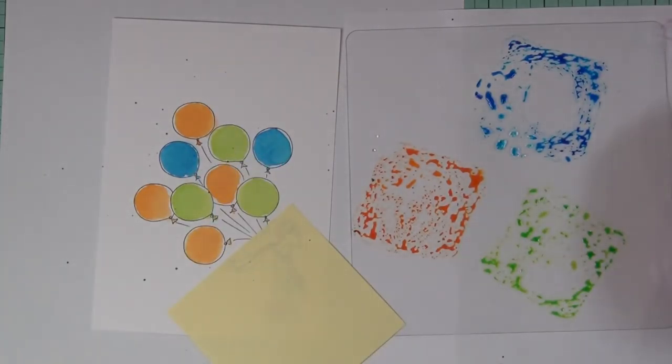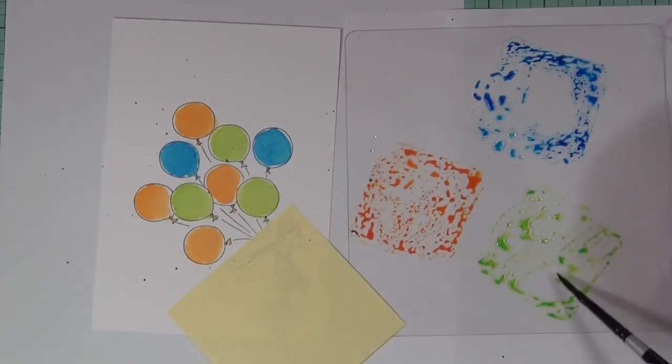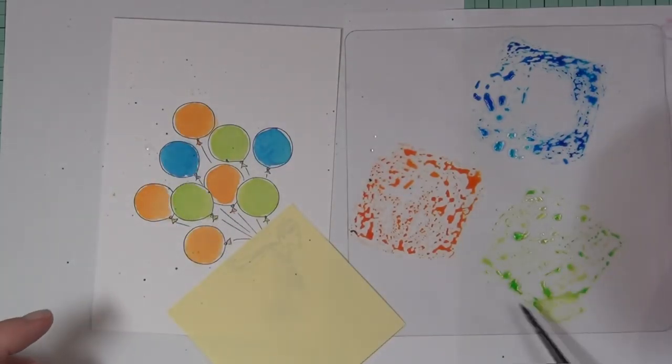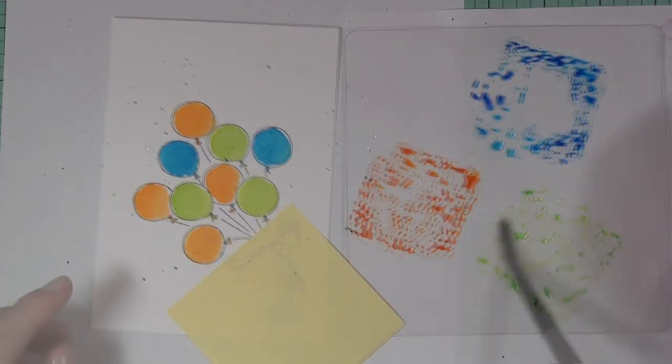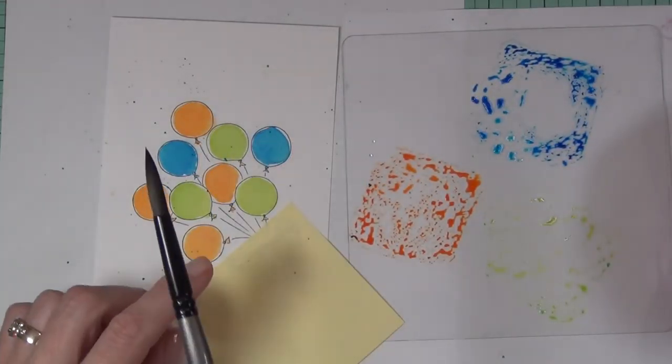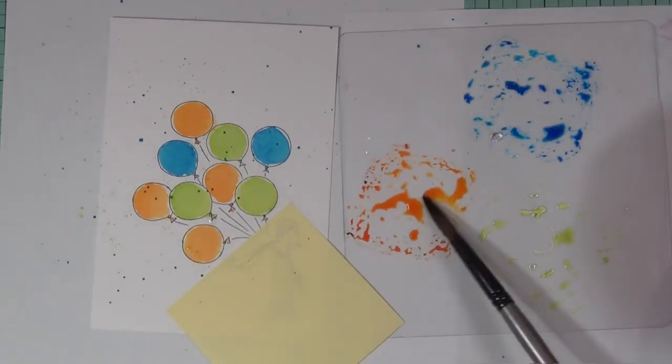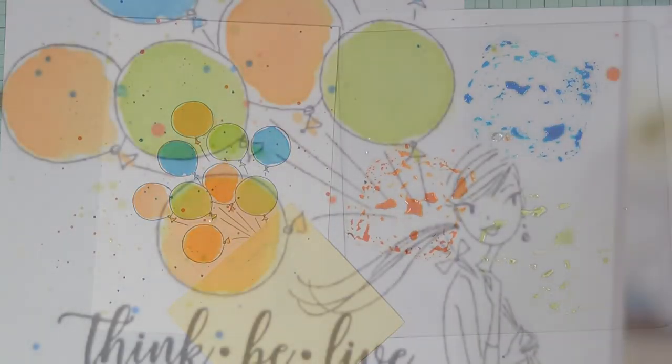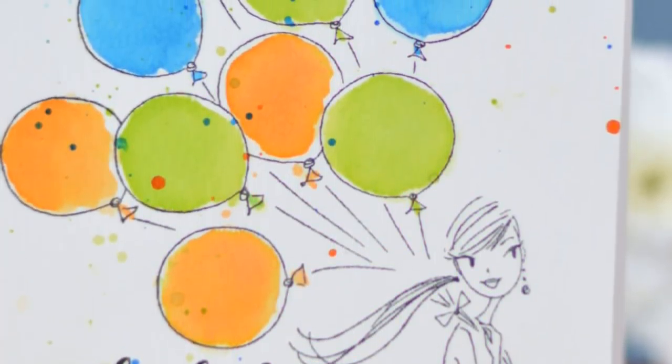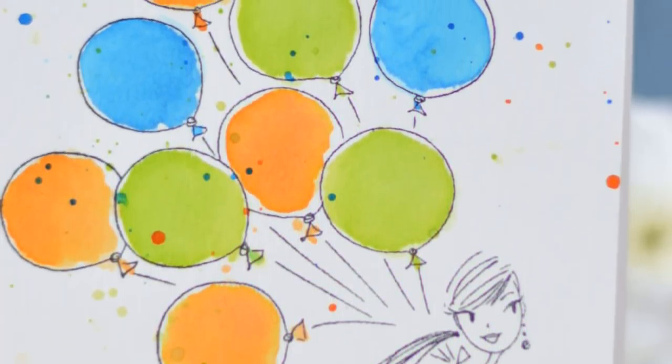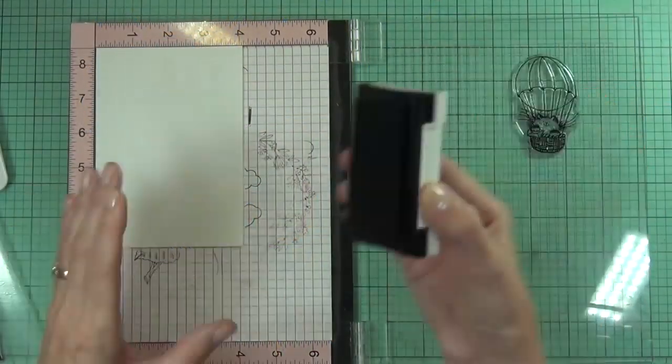I left that to dry and then came in and added some splatters. I wasn't really happy with this small brush splattering so I did come in with a larger brush and that gave me a lot bigger splatters which I thought looked better. These girls are beautiful, they're quite large stamps too.